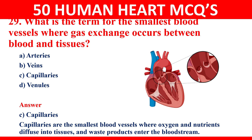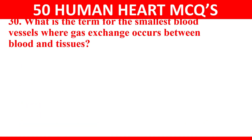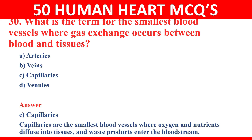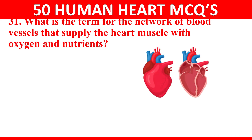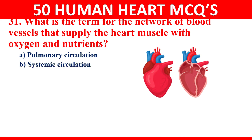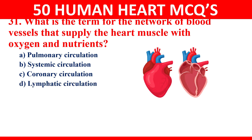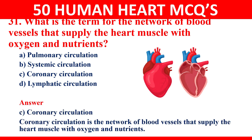Question 30: what is the term for the network of blood vessels that supply the heart muscle with oxygen and nutrients? Your options are pulmonary circulation, systemic circulation, coronary circulation, or lymphatic circulation. The answer is coronary circulation. Coronary circulation is the network of blood vessels that supply the heart muscle with oxygen and nutrients.